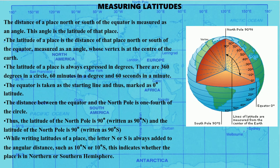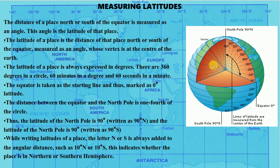Now let us understand how we can measure latitudes. Latitudes help us describe the location of a place — whether it is to the north or south of the equator. The distance of a place north or south of the equator is measured as an angle, and this angle is the latitude of that place. The latitude of a place is the distance of that place north or south of the equator, measured as an angle whose vertex is at the center of the earth. The latitude of a place is always expressed in degrees — 0, 10, 20, 30, 40, 50, 60, 70, 80, 90 degrees.